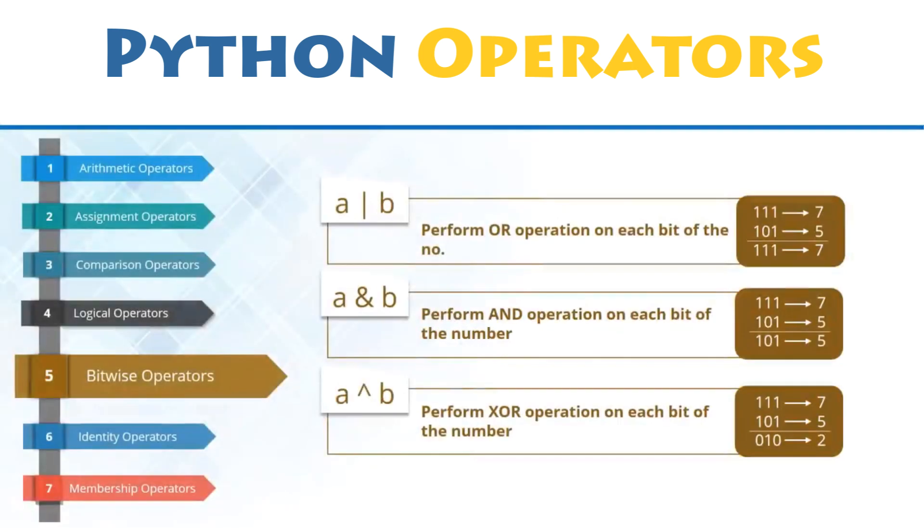Bitwise operators. Let's move forward and look at bitwise operators, which are similar to logical operators, but they treat operands as sequences of binary digits and operate on them bit by bit. For example, 5 is 101 in binary form and 7 is 111.